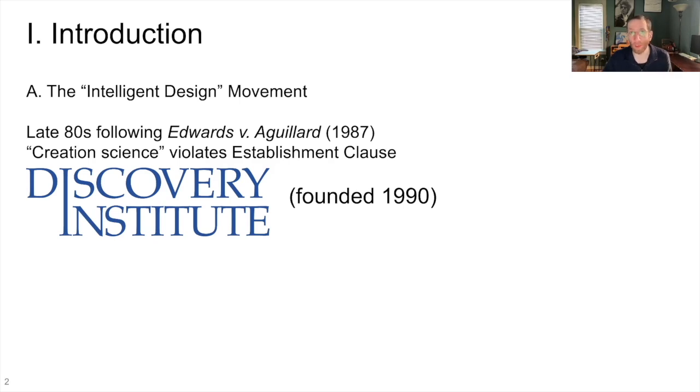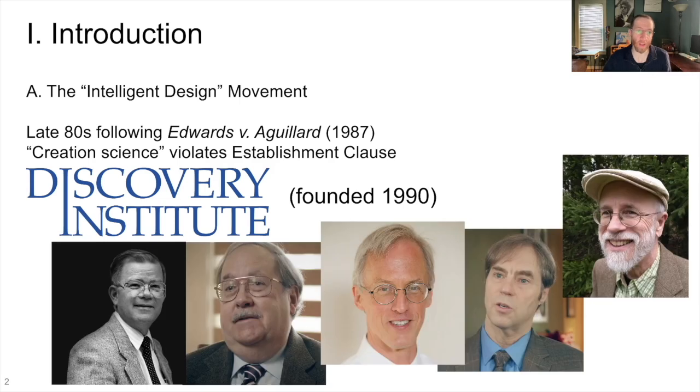And from the Discovery Institute, that's really the primary driver of the intelligent design movement. The people affiliated with the Discovery Institute are all of the big names in intelligent design: Philip Johnson, Jonathan Wells, William Dembski, Stephen C. Meyer, and Michael Behe. These are all the big names in the intelligent design movement. They were all writing about intelligent design in the early to mid-90s. These are the big movers that really got the ID movement off the ground.